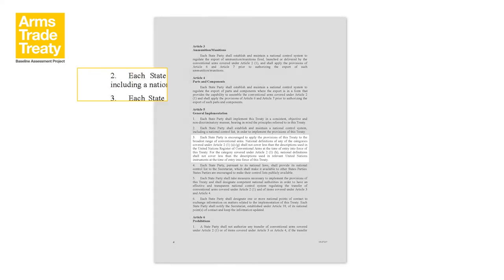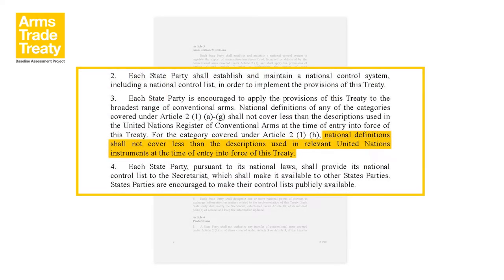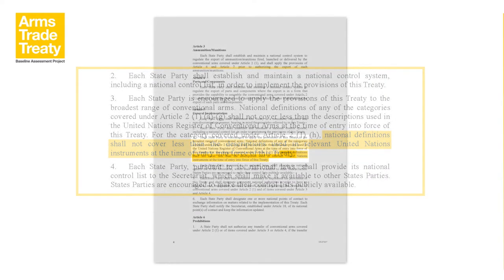Article 5, Paragraph 3 of the ATT provides instruction that, at a minimum, the national definitions for the conventional arms contained in Article 2, Paragraph 1H of the Arms Trade Treaty shall not cover less than the descriptions used in relevant United Nations instruments at the time of entry into force of this treaty. The ATT entered into force on 24 December 2014.